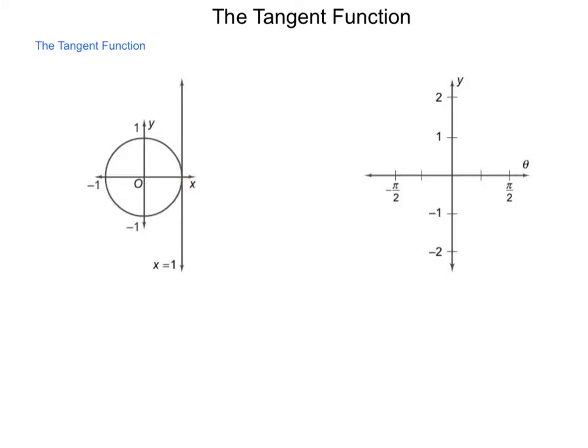The way a tangent function derives its name is if we were to draw a line in standard position from the origin, where would that line with angle theta intersect our tangent line of x equals 1?